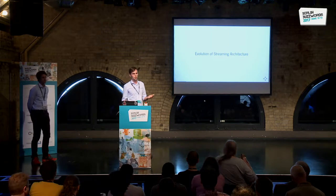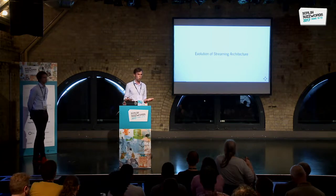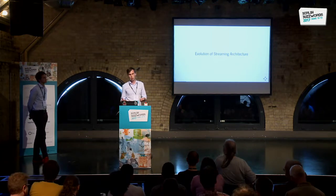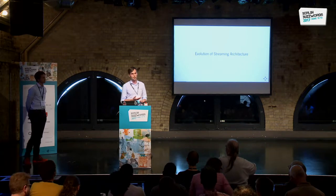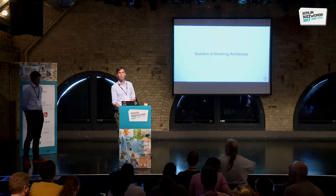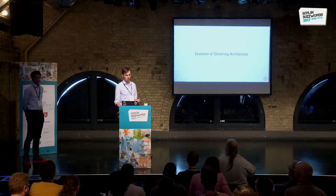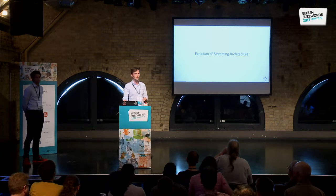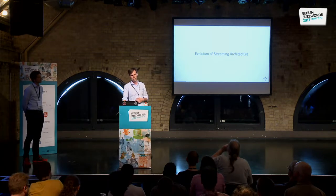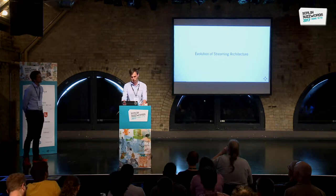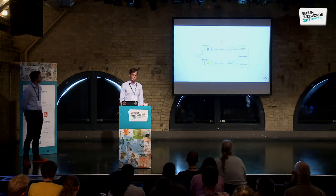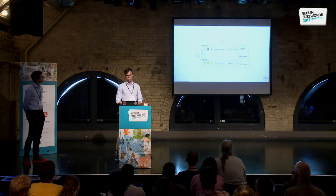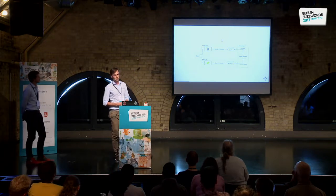For example, think of some kind of a web shop where for each user, you want to know exactly how many clicks he had in a day and you want this number to be exact, but then you also need, let's say every minute, the average clicks across users or something like that. Traditionally, what people have used in order to solve problems like this is a dual approach, which is known as the Lambda architecture.